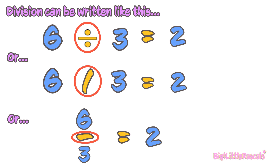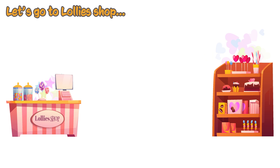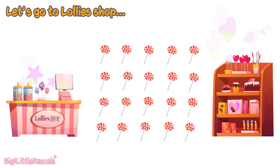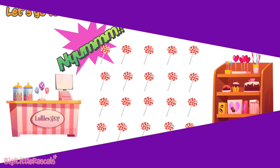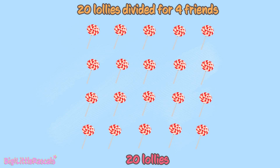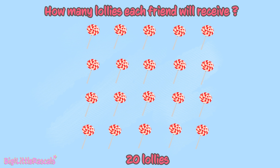Those are the signs for division. Now let's go to the lollies shop. Let's buy 20 lollies. Yum! Let's share these 20 lollies equally to 4 friends. How many lollies will each friend get?